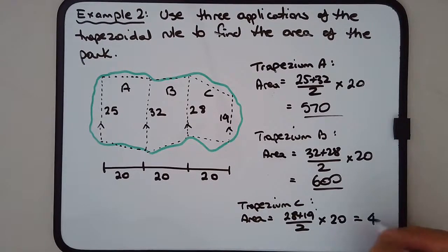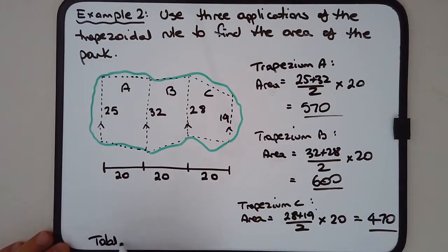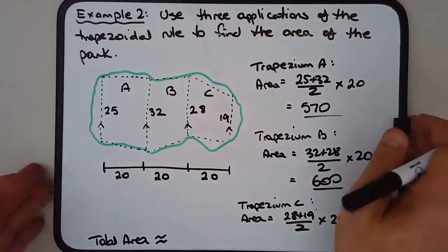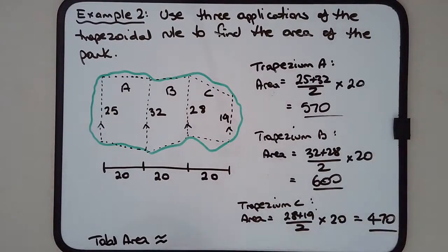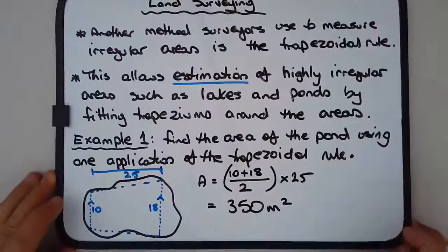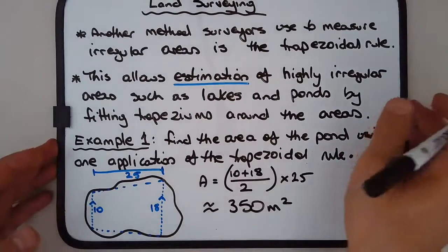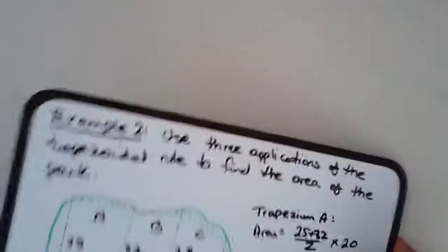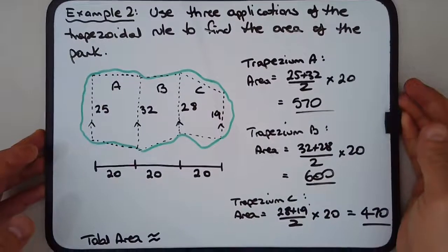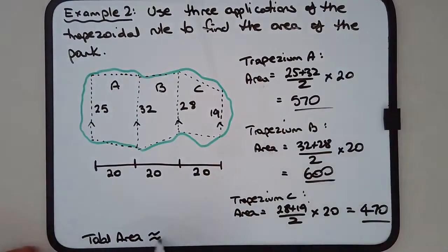So the total area is approximately equal to - notice we use the approximately equal to sign. Actually, on the other one I didn't use that, but it should be approximately equal to because it's an estimation, as I made that point earlier. It's important that we use that symbol there.